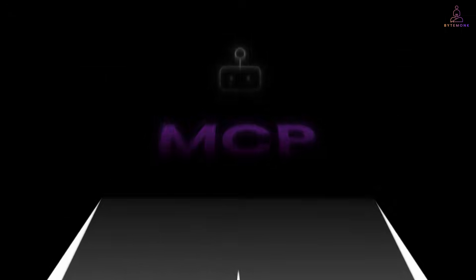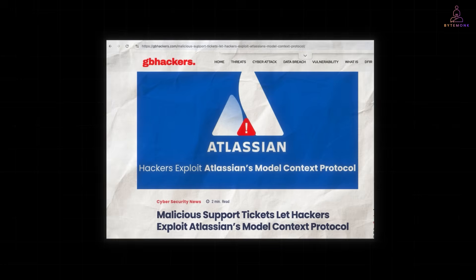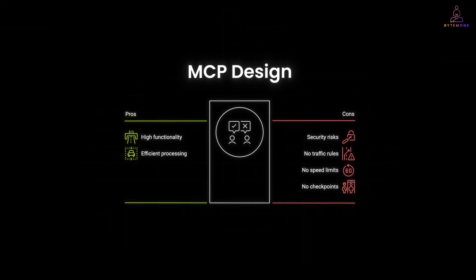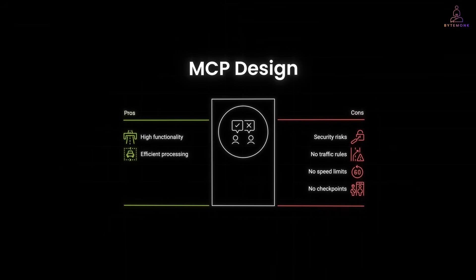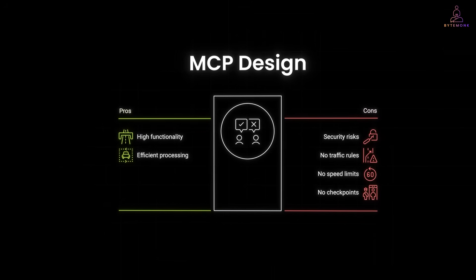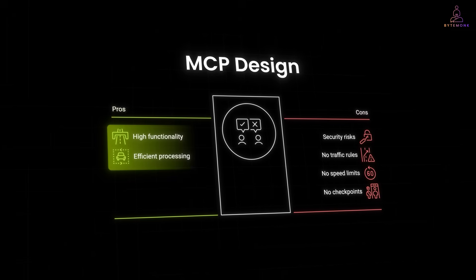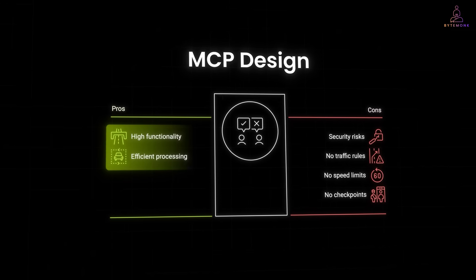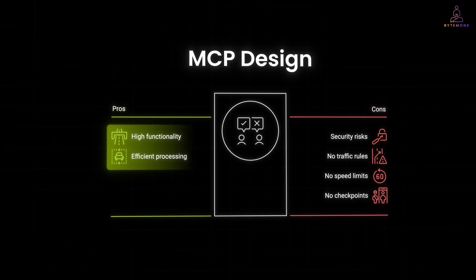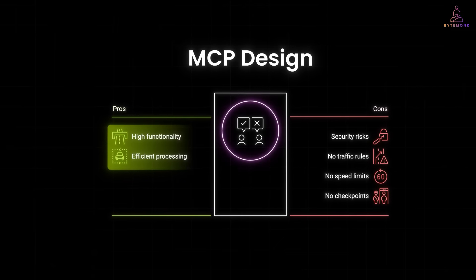Or what if prompt injection tricks it into deleting data instead of reading it? For example, Atlassian's MCP implementation had a flaw where attackers could inject forged inputs to gain unauthorized privileges. MCP was designed for functionality, not security. It's like a superhighway for AI requests, but without traffic rules, speed limits or checkpoints.